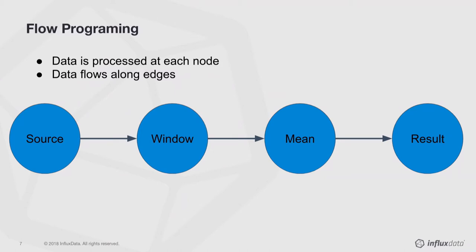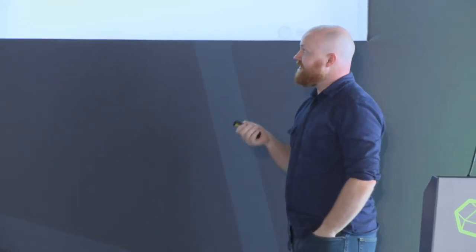The edges represent the data flowing. The way Capacitor thinks of the data is the same way the database thinks of the data: as points. Every point has a set of fields, a set of tags, and a timestamp. As data flows along the edges of the execution graph in Capacitor, that's what it's seeing — those points with those fields and tags.